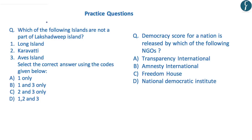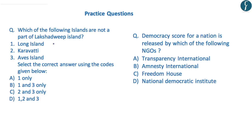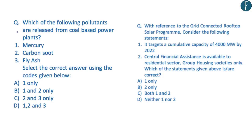After today's discussion, try and answer the practice questions. First: which of the following islands are not part of the Lakshadweep islands — Long Island, Karavatti, and Aves Island? As discussed, Long Island and Aves Island are part of Andaman & Nicobar islands, not Lakshadweep. Karavatti is part of Lakshadweep. Correct answer is B — one and three are not part of Lakshadweep. Second: the democracy score for a nation is released by which NGO? It is released by Freedom House.